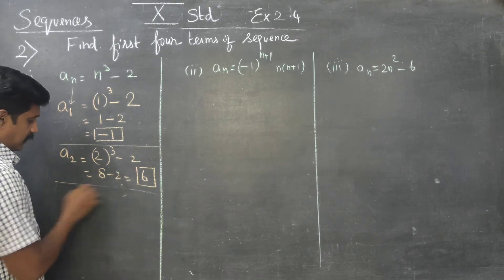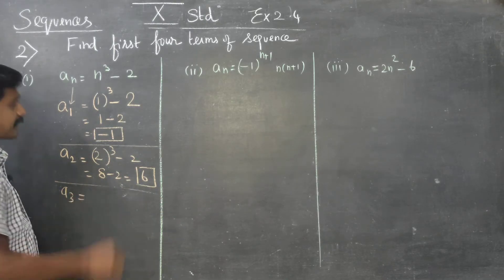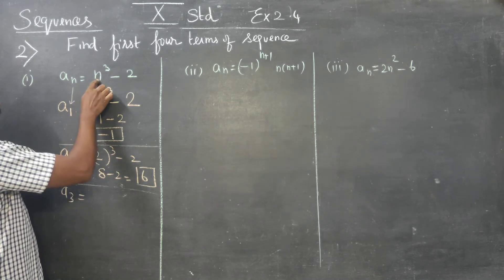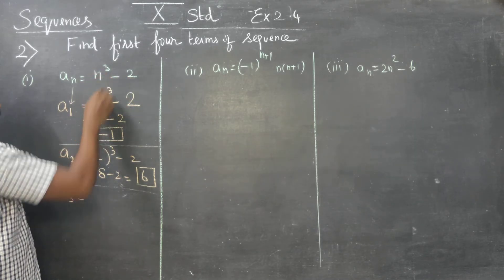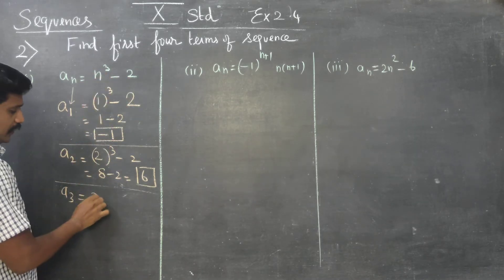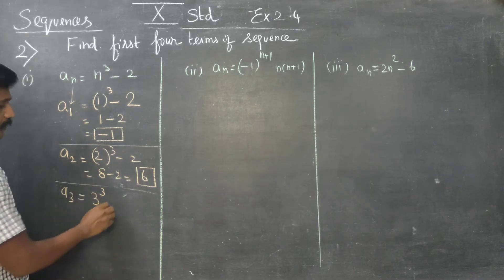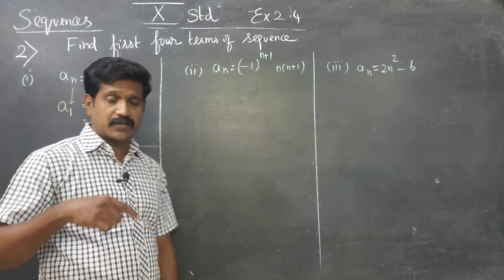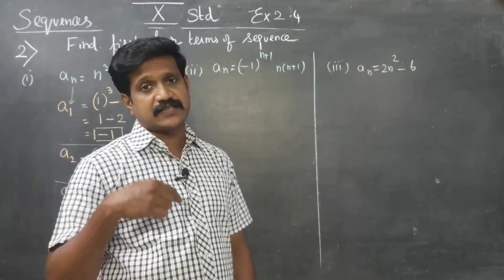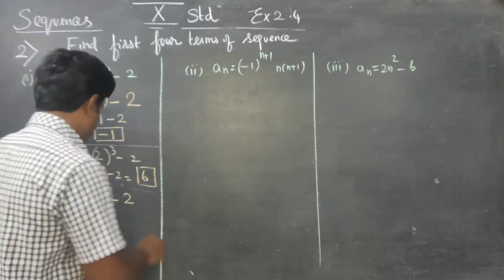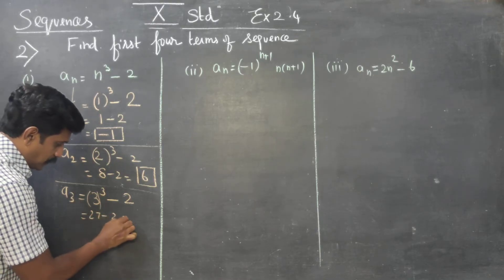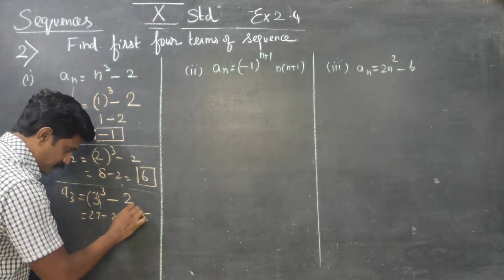Then A3. Put n = 3 into the formula: 3 cube minus 2. 3 cube means 3 into 3 into 3. 3 into 3 is 9, into 3 is 27. Now 27 minus 2, answer is 25. Super.